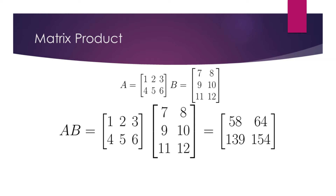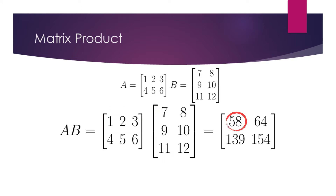Now let's do an example. First, we obtain the dot product of the first row of A and the first column of B. The result is 58. Since this answer was obtained from the first row and the first column, we write the result in the first row of the first column in the resulting matrix. Next, let's obtain the dot product of the first row of A and the second column of B. The answer is 64. We write 64 in the first row of the second column.